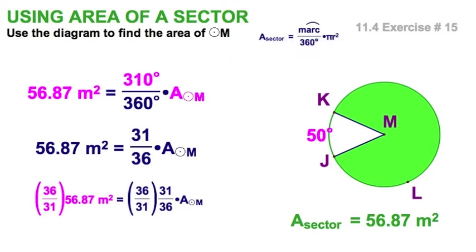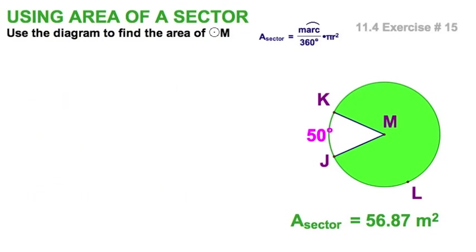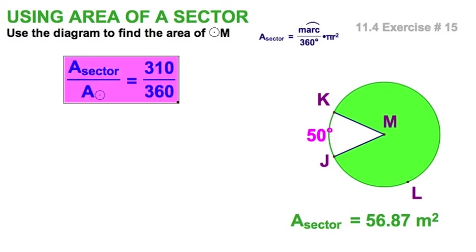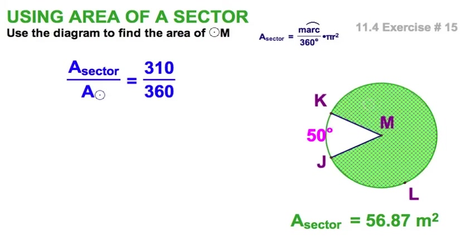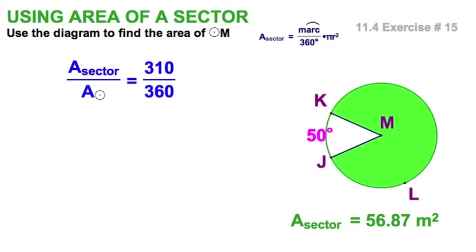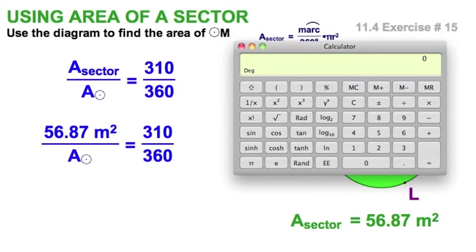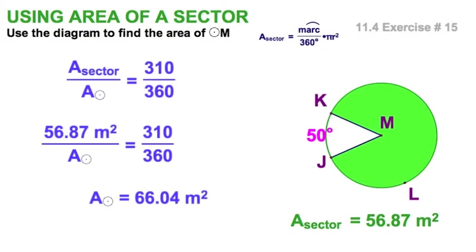But we're going to look at it a different way. We're just going to do it much easier. All right, start over. Proportions. Look at this. The area of the green giant of the sector is to the area of the whole circle as 310 degrees is to 360. So, one little substitution and you're there. Then you go and you pull up your handy-dandy calculator, and you just do the old cross product thing. Just say 56 and 87 hundredths times 360, and then we're going to take that gigantic number and divide it by 310. And we should be done. To the nearest hundredth 66 and four hundredths. And there you go. There you go.